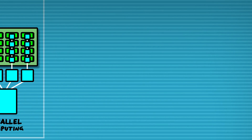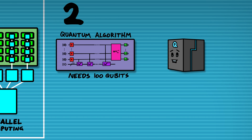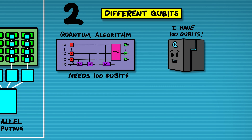Number two: imagine this situation — you've got someone who says they've developed a quantum algorithm that needs 100 qubits to run, and you've got another person who says they've built a quantum computer with 100 qubits in it. So any normal person would say you can just take that algorithm and put it on that machine and get an answer. But in most cases that's really not true, because they're talking about two different kinds of qubits.